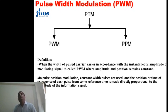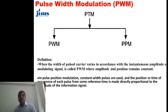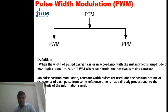In pulse width modulation, the amplitude and position of the pulse are constant — only the width of the pulse varies. In pulse position modulation, constant-width pulses are used, meaning the pulse width is constant, and the position or time of occurrence of each pulse from some reference time is made directly proportional to the amplitude of the information signal.